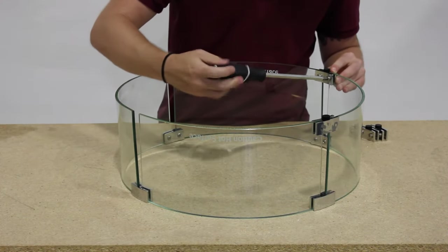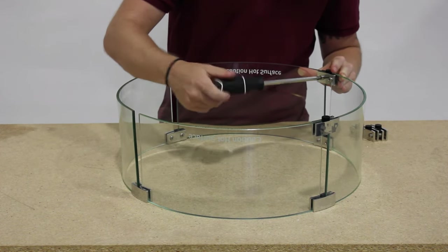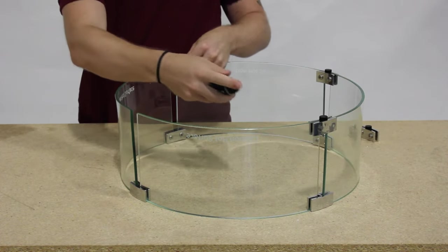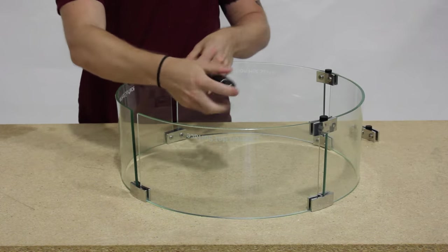After attaching the first bottom connector, the other three can be attached in the same way. Again, leave all screws with a loose fit, as you may need to shift the panels.